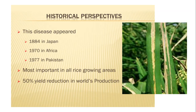What is the historical perspective of this disease? This disease first occurred in 1884 in Japan, then it was reported in Africa in 1970 and in Pakistan in 1977. It is the most important bacterial disease in all rice-growing areas, with up to 50% yield reduction recorded in world production.